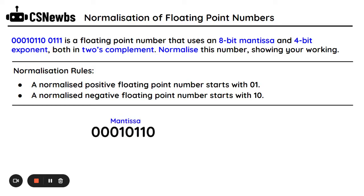I'm going to write out my 8-bit mantissa and look at the most significant bit, which is the bit on the far left-hand side. Because this is a 0, that tells me it's a positive number. Therefore, I need to edit this mantissa until it starts with 0, 1, instead of currently 0, 0, 0, 1. So I put in a decimal point, and I need to move this decimal point until it's between a 0 and a 1.